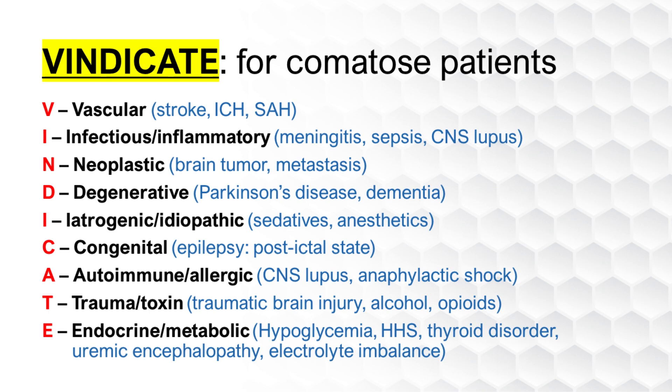T — Trauma or Toxin, such as Traumatic Brain Injury, Alcohol, or Opioids. E — Endocrine or Metabolic, such as Hypoglycemia, HHS, Thyroid Disorder, Uremic Encephalopathy, or Electrolyte Imbalance.